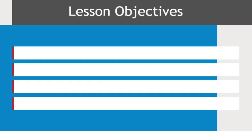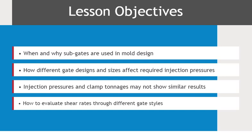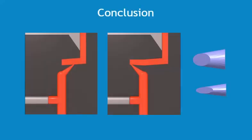This concludes Gates Lesson 3a, Round and Oval Dual Subgates. In this lesson, you learned when and why sub-gates are used in mold design, how different gate designs and sizes affect required injection pressures, why injection pressures and clamp tonnages for different gates may not show similar results, and how to evaluate shear rates through different gate styles. Evaluating gate type and size is an important factor in achieving successful mold design. As we saw in this lesson, smaller gate sizes will result in higher injection pressures and potentially material degrading shear rates. Determining an appropriate gate size will optimize the molding process window and guarantee high-quality molded parts.